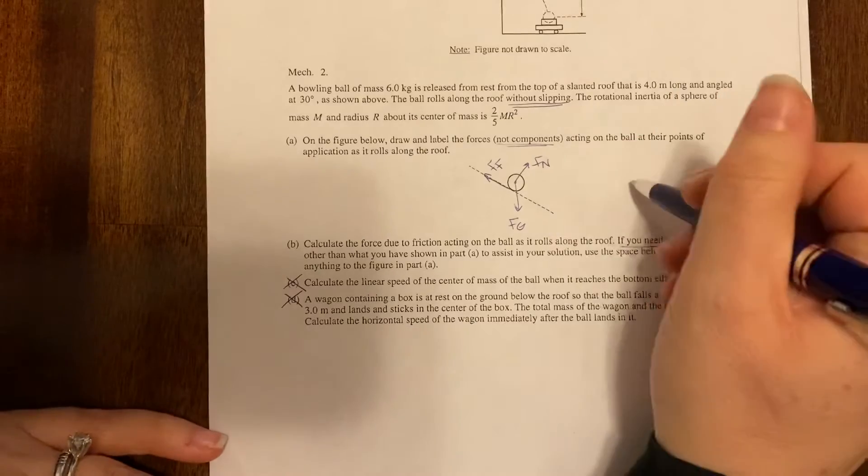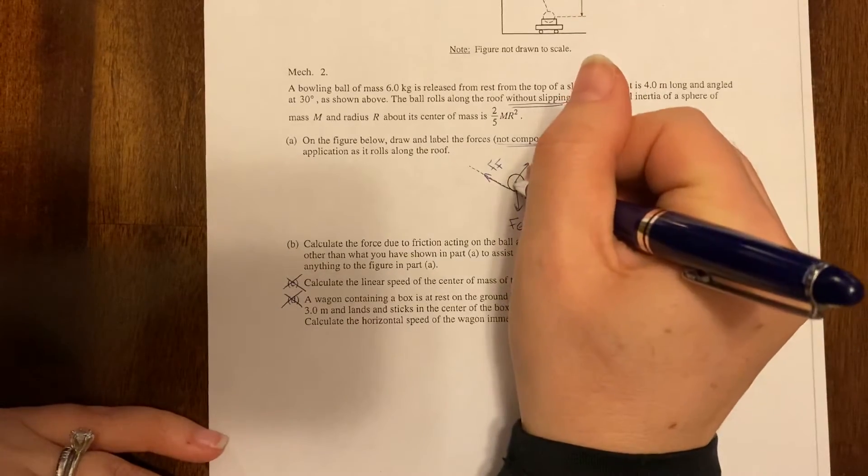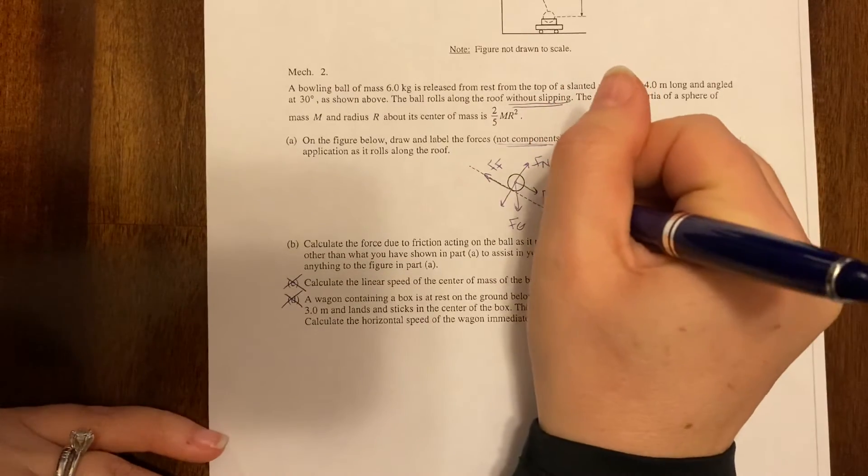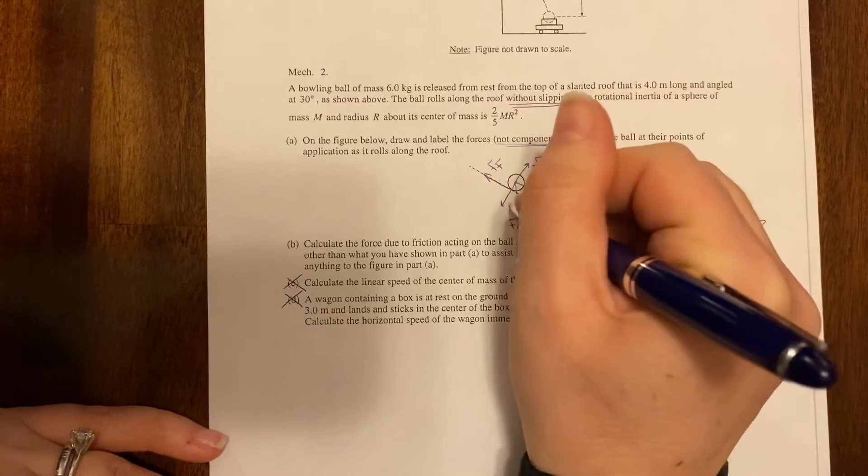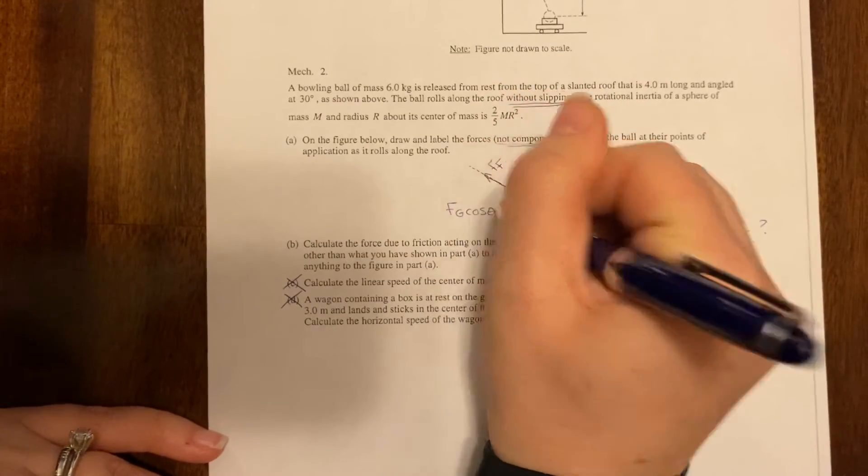So if this was the real AP exam we would redraw this over here but you know it's not so we're just going to draw in the components here of the force of gravity. We know basically that Fg sine theta pulls things down the ramp and this guy here is Fg cosine of theta.